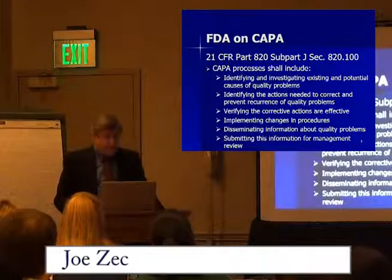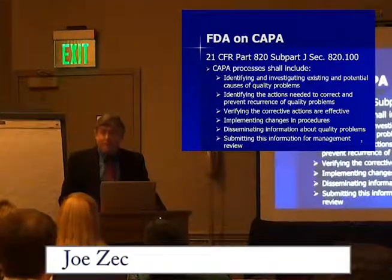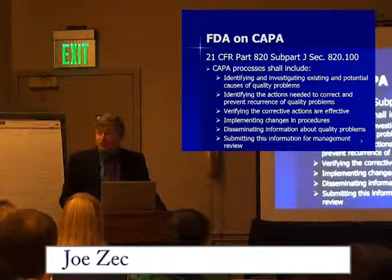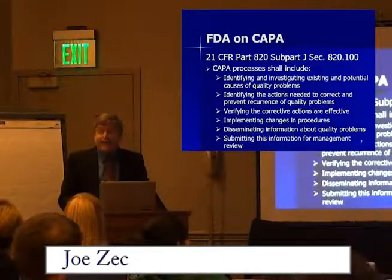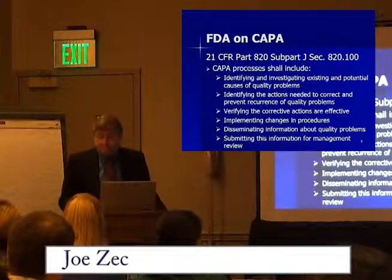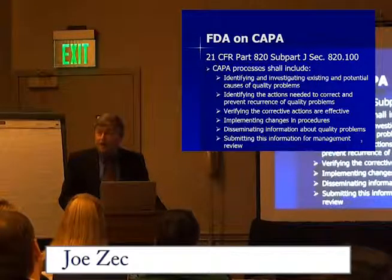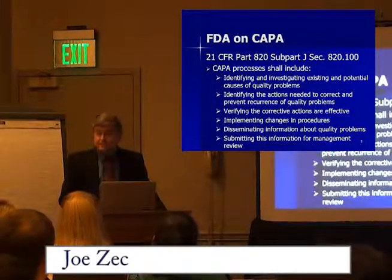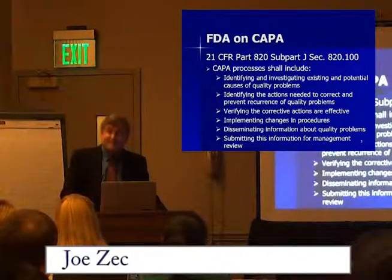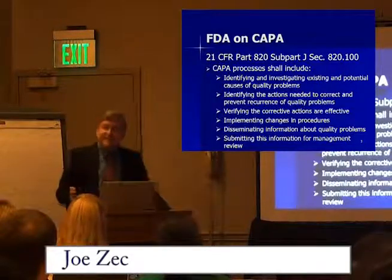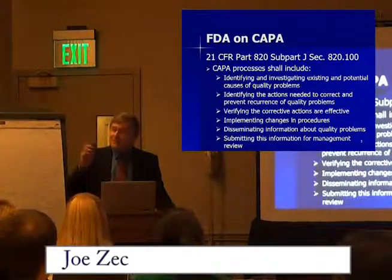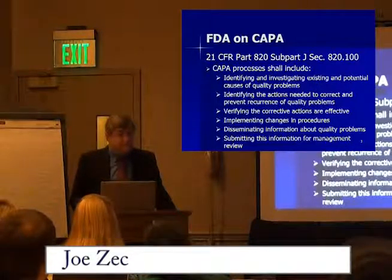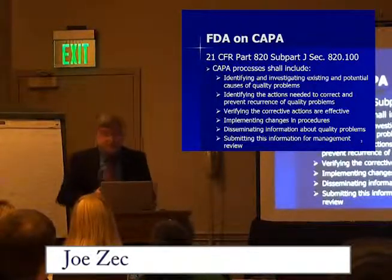Finally, the last part of the regulation on CAPA talks about submitting this information for management review. It's very important that the executive team gets a look at CAPAs and trends in CAPAs so they can take company-wide action to fix systemic problems. As you know from 21 CFR Part 820, management has the ultimate responsibility and authority for quality in a company — if someone's going to be held accountable, it's going to be the CEO. Management needs this information so they can review it regularly. That's the quality system regulation on CAPA.